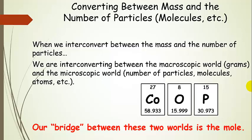In our last presentation, we talked about converting between mass and moles, and the reverse — moles to mass. We also talked about converting from moles to number of particles and the reverse. Now we're going to talk about interconverting between mass and the number of particles, which means going from something we can measure and see in the macroscopic world, to something we can't see in the microscopic world — the number of particles, molecules, or atoms. The bridge between these two worlds is the mole.